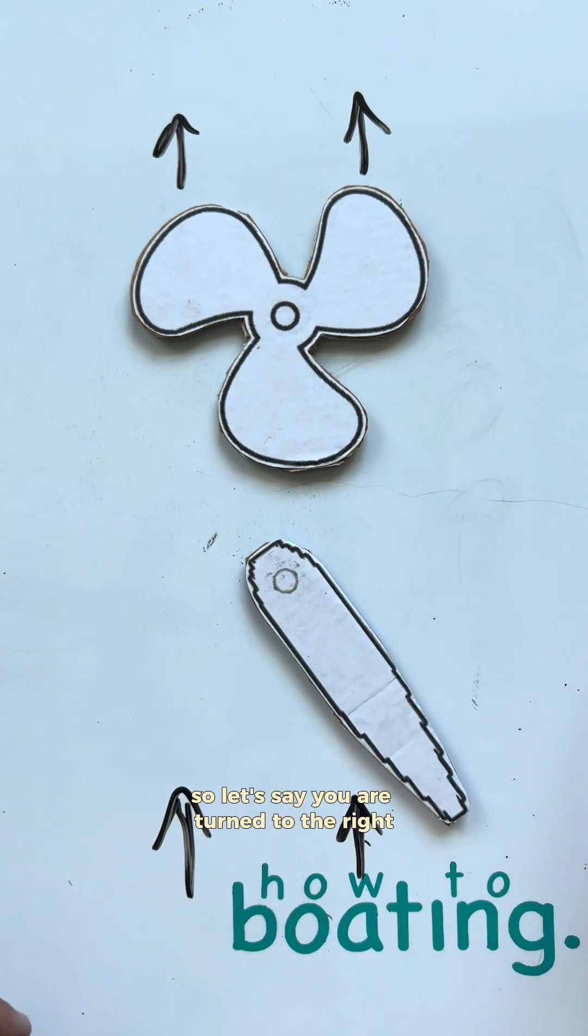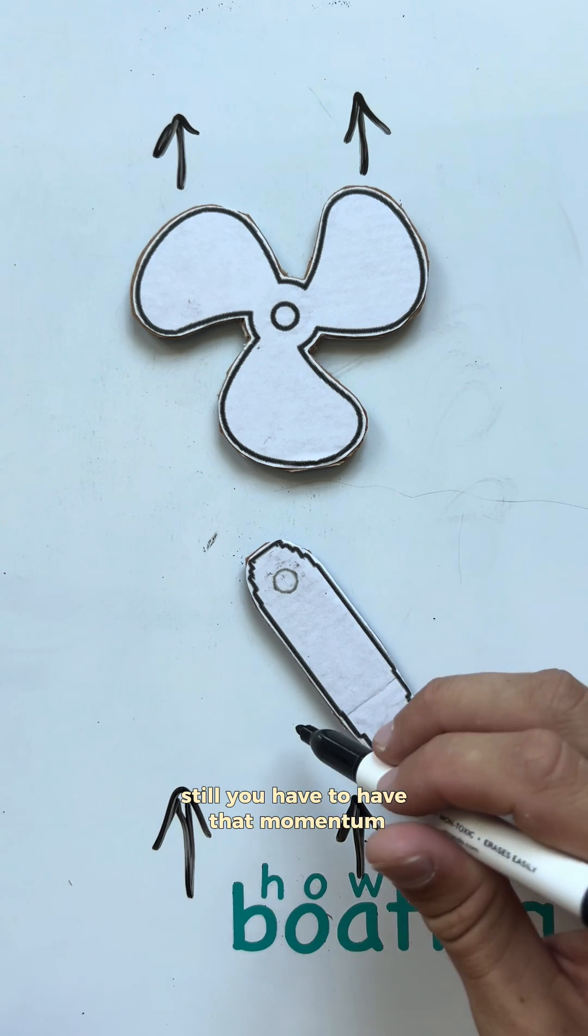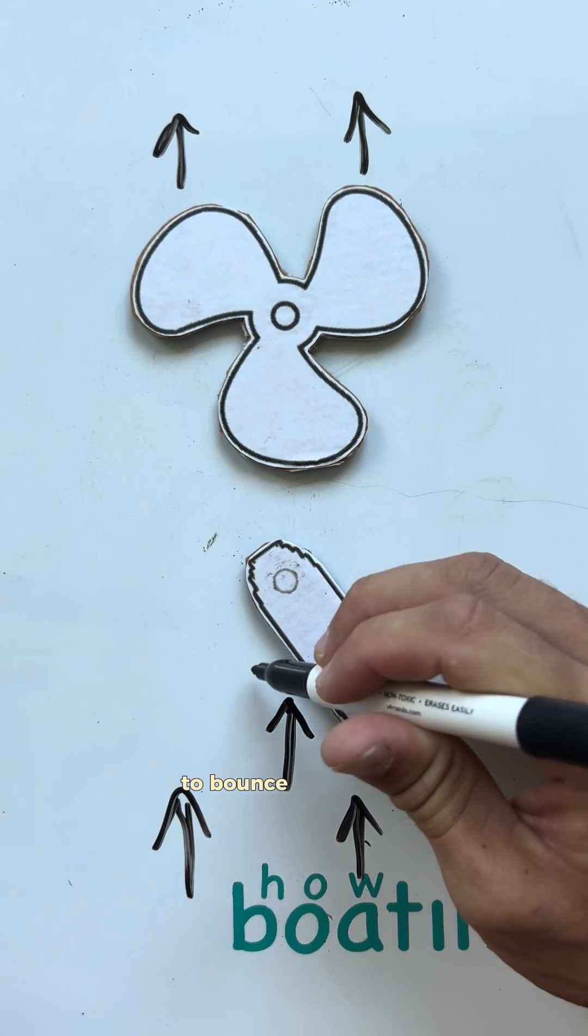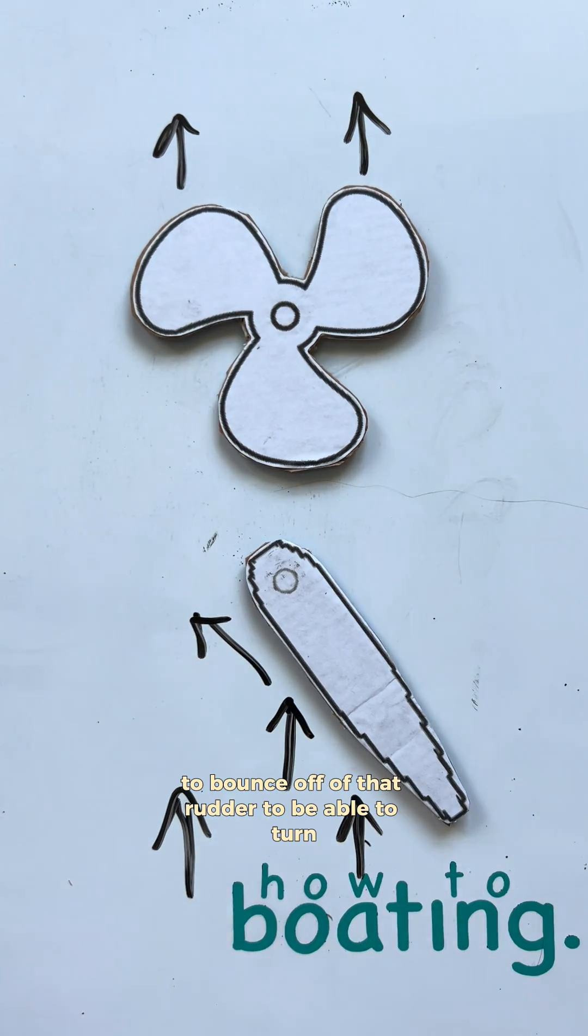So let's say you are turned to the right still. You have to have that momentum to bounce off of that rudder to be able to turn.